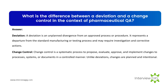What is the difference between a deviation and a change control in the context of pharmaceutical QA? A deviation is an unplanned divergence from an approved process or procedure — it represents a departure from the standard manufacturing or testing process and may require investigation and corrective actions. Change control is a systematic process to propose, evaluate, approve, and implement changes to processes, systems, or documents in a controlled manner. Unlike deviations, changes are planned and intentional.